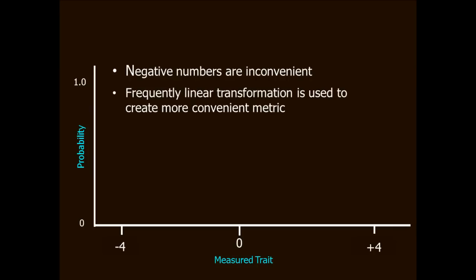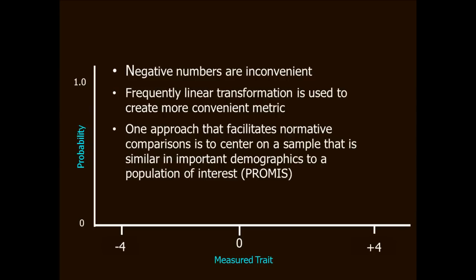To get around this, most IRT-scaled scores are rescaled using a linear transformation. This is done to place the scores on a more convenient metric. One approach that makes a lot of sense and helps you if you want to make comparisons to some relevant population is to center the scores on the mean of that relevant population. Before, I mentioned NIH PROMIS Measures. The first PROMIS Measures were centered on the mean of the 2000 U.S. General Census. That's really handy because when you get a PROMIS Score then, it has inherent meaning relative to the general U.S. population.